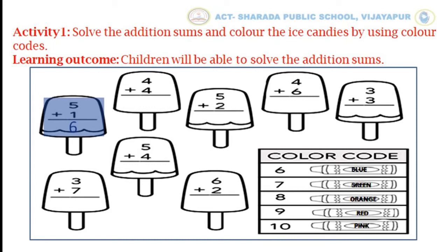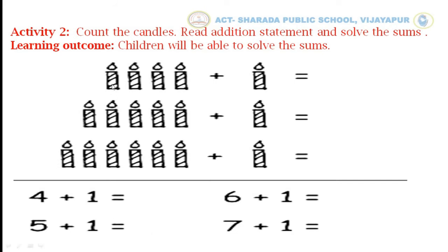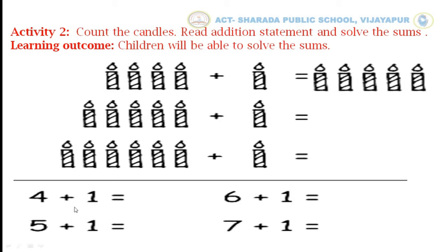Now we will move to activity 2. We will count candles in the first row: 1, 2, 3, 4 plus 1 — total 5 candles. Draw 5 candles in front of the equal to symbol. At the bottom we can see the addition fact: 4 plus 1 is equal to 5. Write 5. In the same way, you complete the second row.